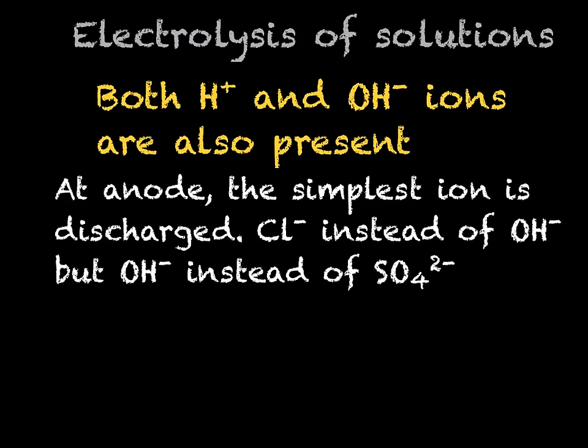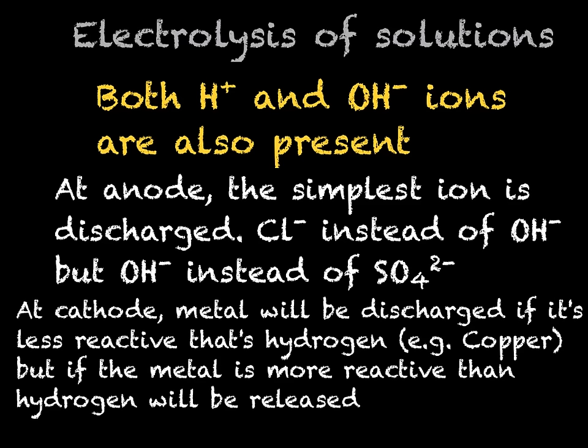At the cathode, the metal will be discharged if it's less reactive than hydrogen. If the metal is more reactive than hydrogen, then hydrogen is discharged. For example, copper is less reactive than hydrogen so it will be discharged, whereas sodium is far more reactive than hydrogen, so therefore hydrogen will be discharged. We will look at this in relation to copper sulfate.